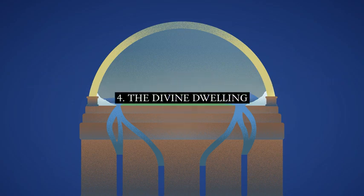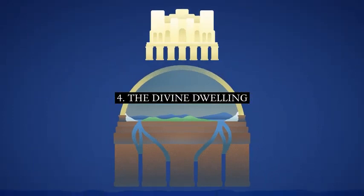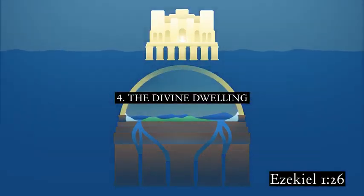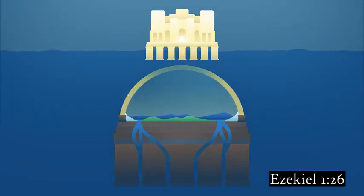4. The Divine Dwelling. God's throne sits directly above the firmament. Just as the pillars of the earth are struck in the waters below, God likewise layeth the beams of His chambers in the waters which are above the earth.